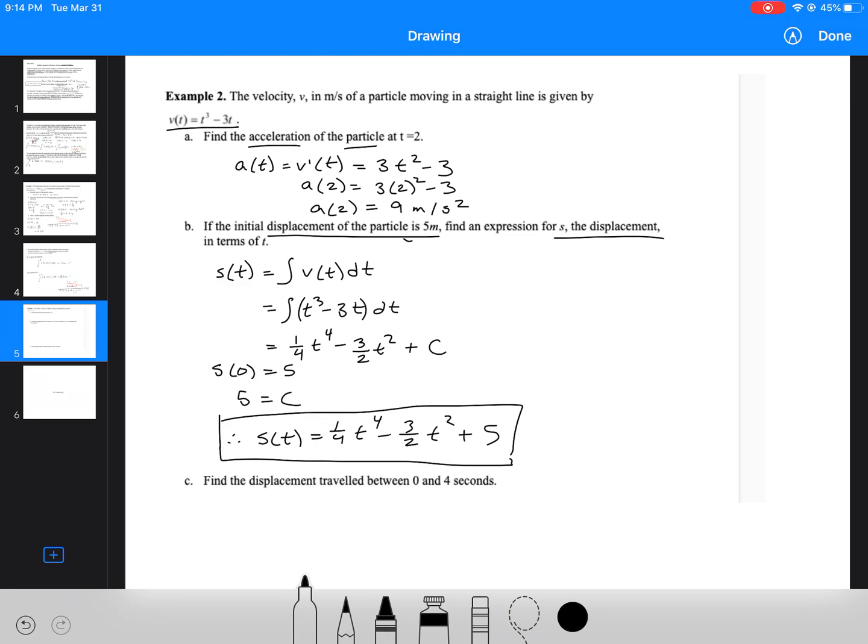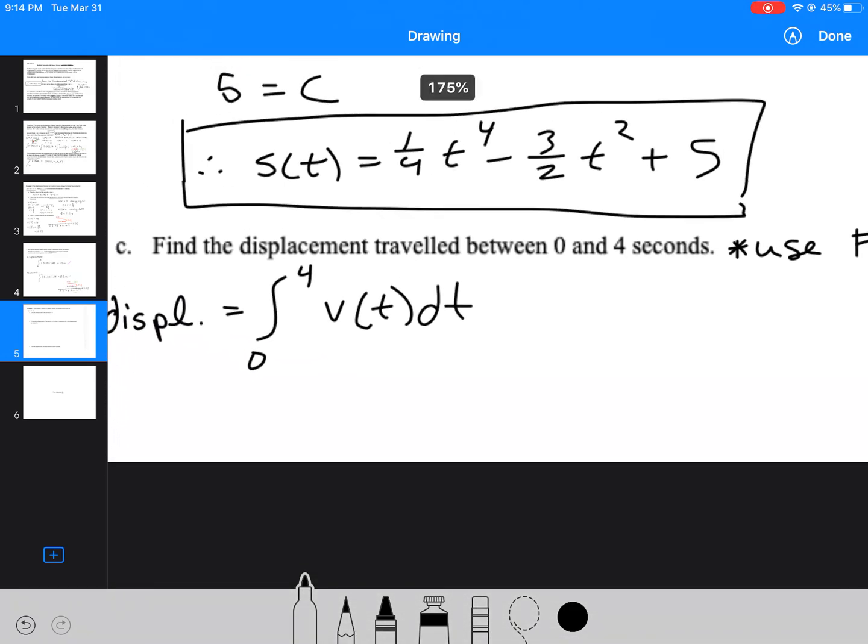The last thing that I'm going to do is find the displacement traveled between 0 and 4 seconds. So here I can use the fundamental theorem of calculus, and I'm going to use a definite integral. So my displacement is going to be the integral between 0 and 4 of my velocity function.